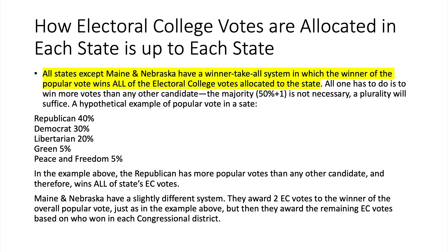As a hypothetical example: the Republican wins 40% of the popular vote, Democrat 30%, Libertarian 20%, Green 5%, Peace and Freedom 5% — totaling 100%. No one has a majority, but the Republican has a plurality of 40%. In all states except Maine and Nebraska, the Republican candidate would win all of that state's electoral college votes.